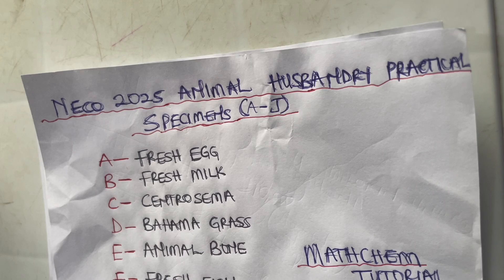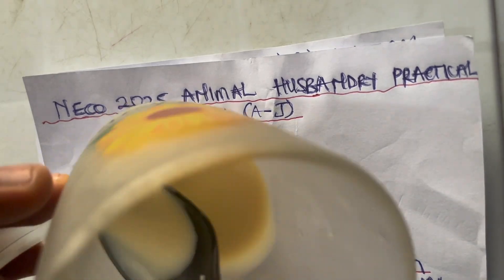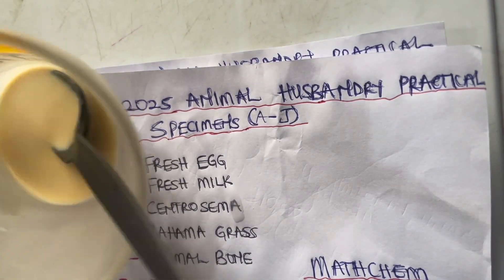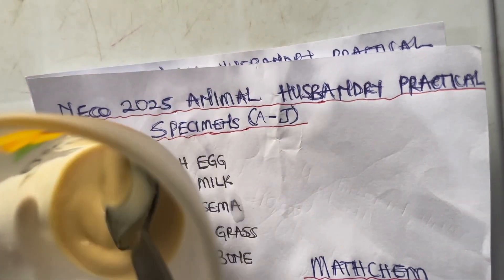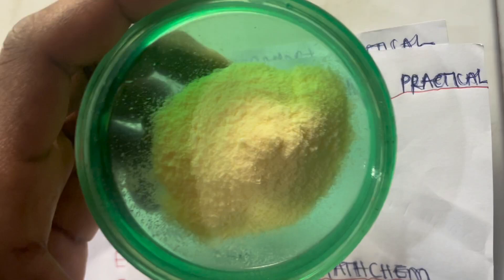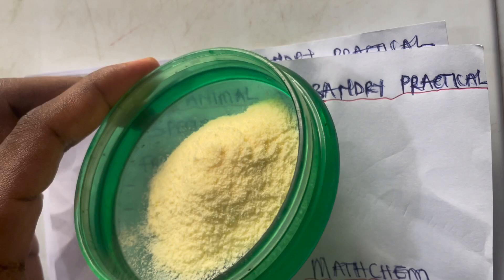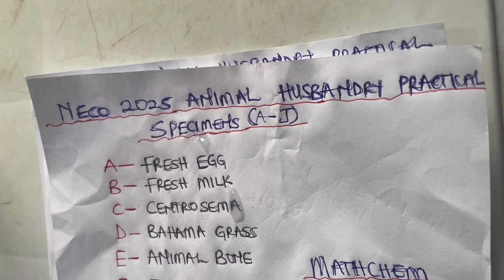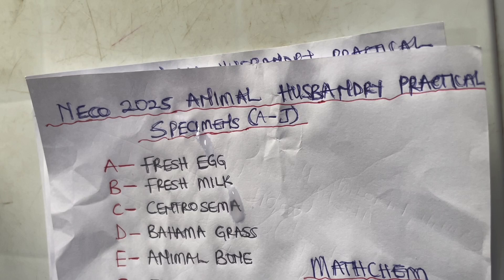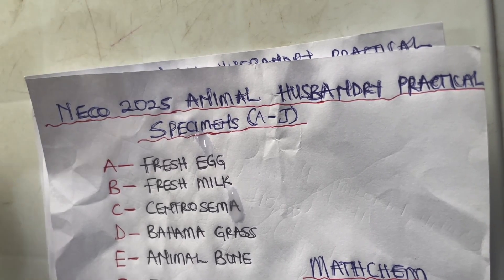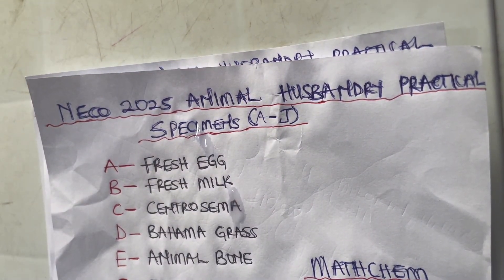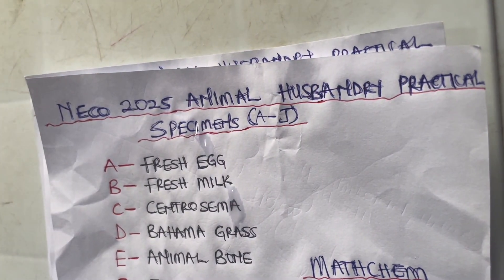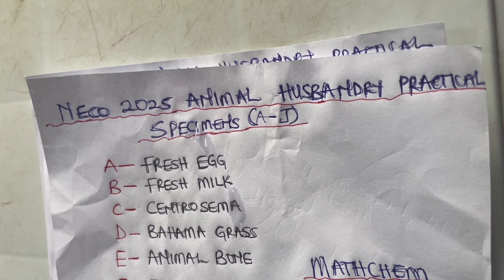Specimen B is fresh milk. Now, the milk I'm showing here is an evaporated milk, and this other one is a powdered milk — neither of these is fresh milk. Fresh milk is milk obtained directly from the breast of a cow. These two milks I showed you have passed through some processes, while fresh milk has not passed through any processes — it is just naturally collected from the breast of a cow.